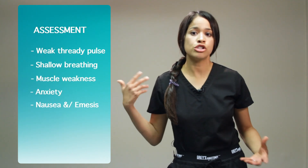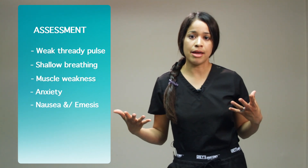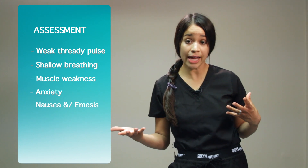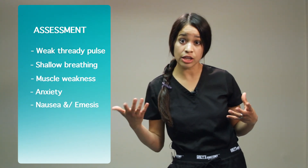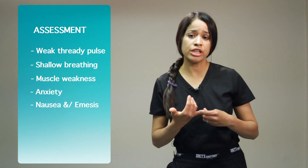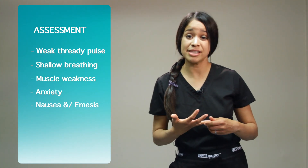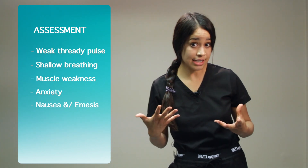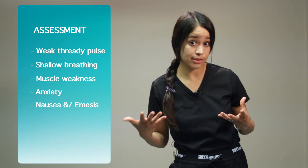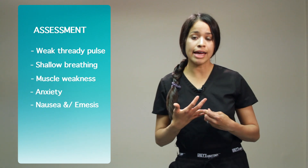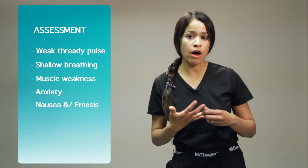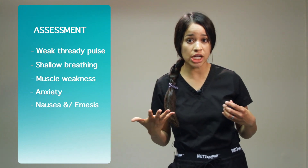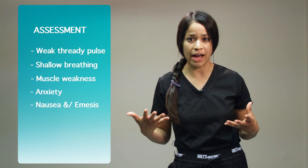For respiratory, this is your patient that has shallow breathing, and if you drew an arterial blood gas, they may be alkalotic — their pH elevated. This patient can also have anxiety, muscle weakness, and decreased tendon reflexes, so they can be hypoactive as well. For GI — gastrointestinal — you're going to see nausea, vomiting, potentially a paralytic ileus, constipation, and dehydration. These are all contributing factors.